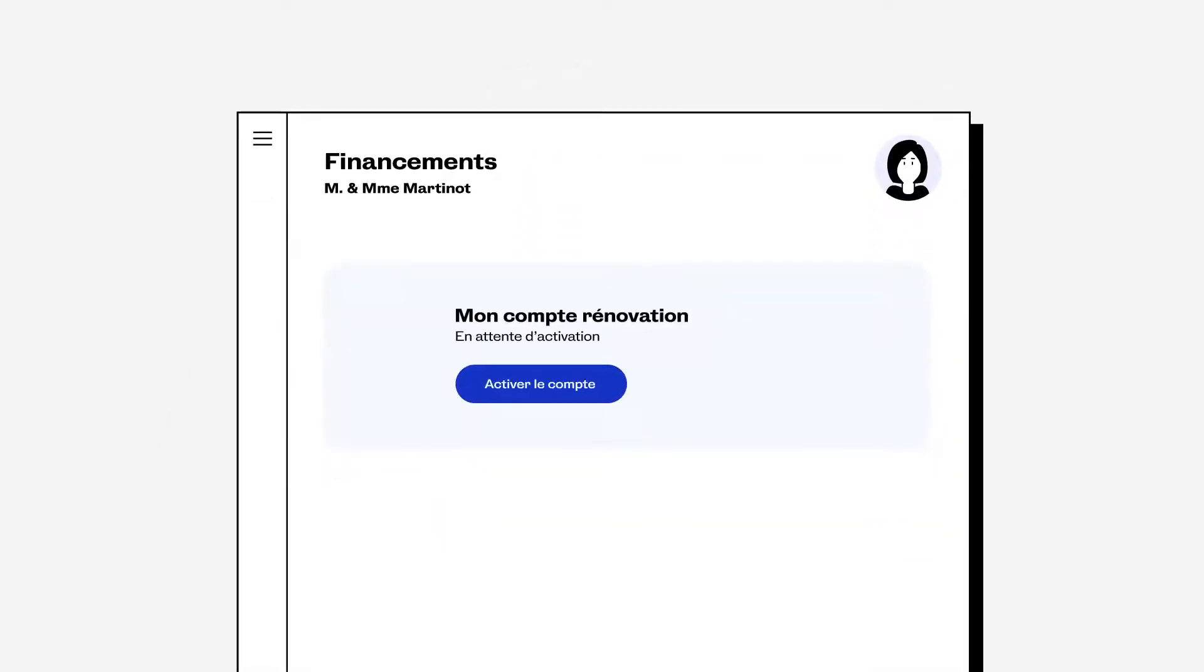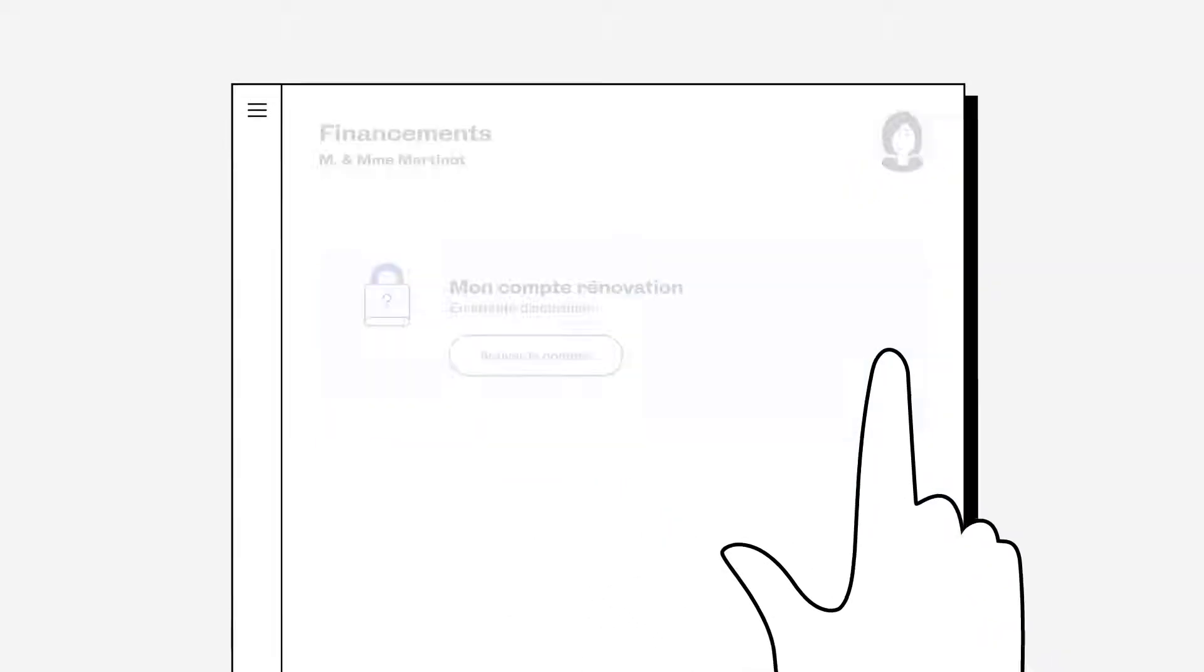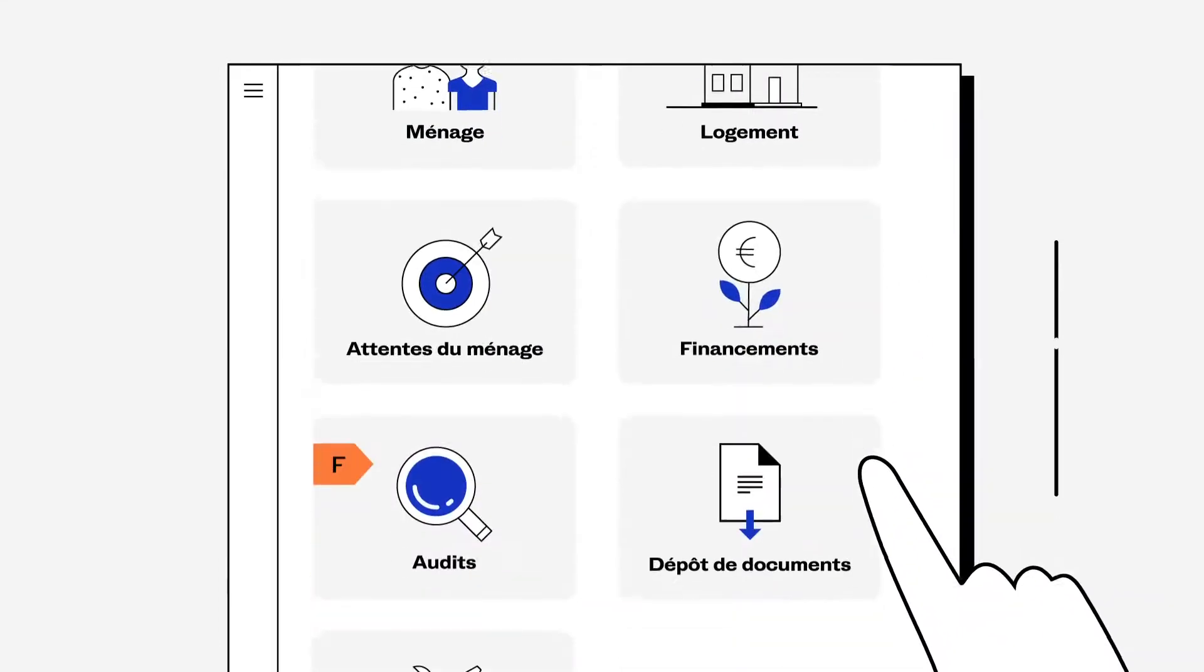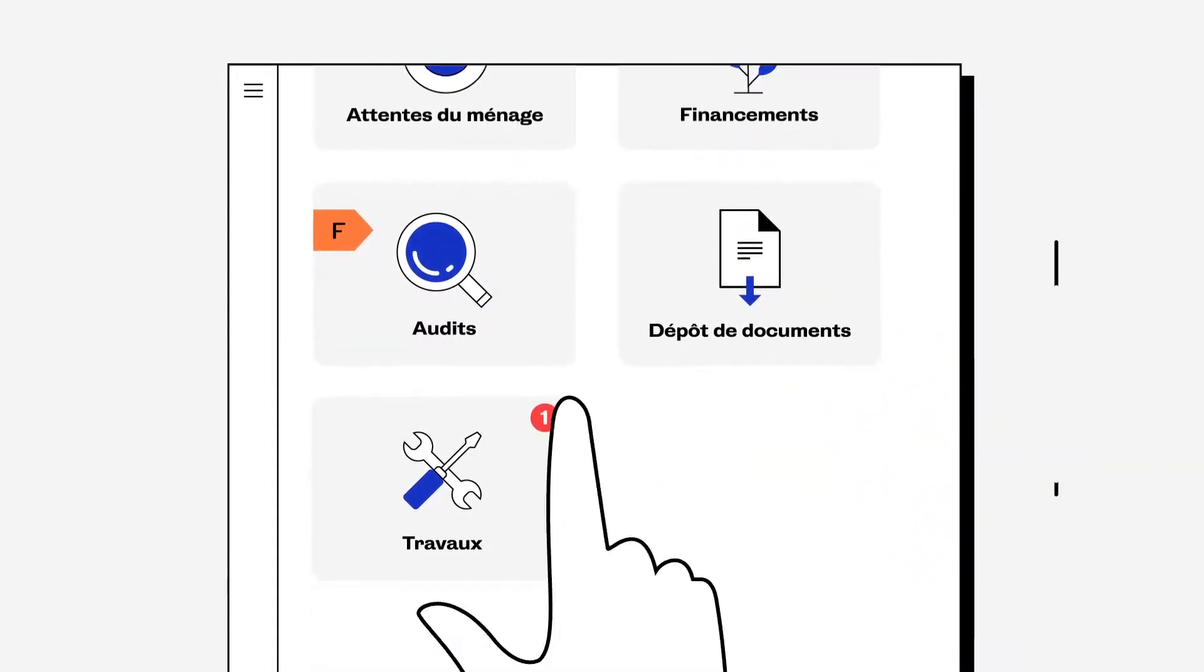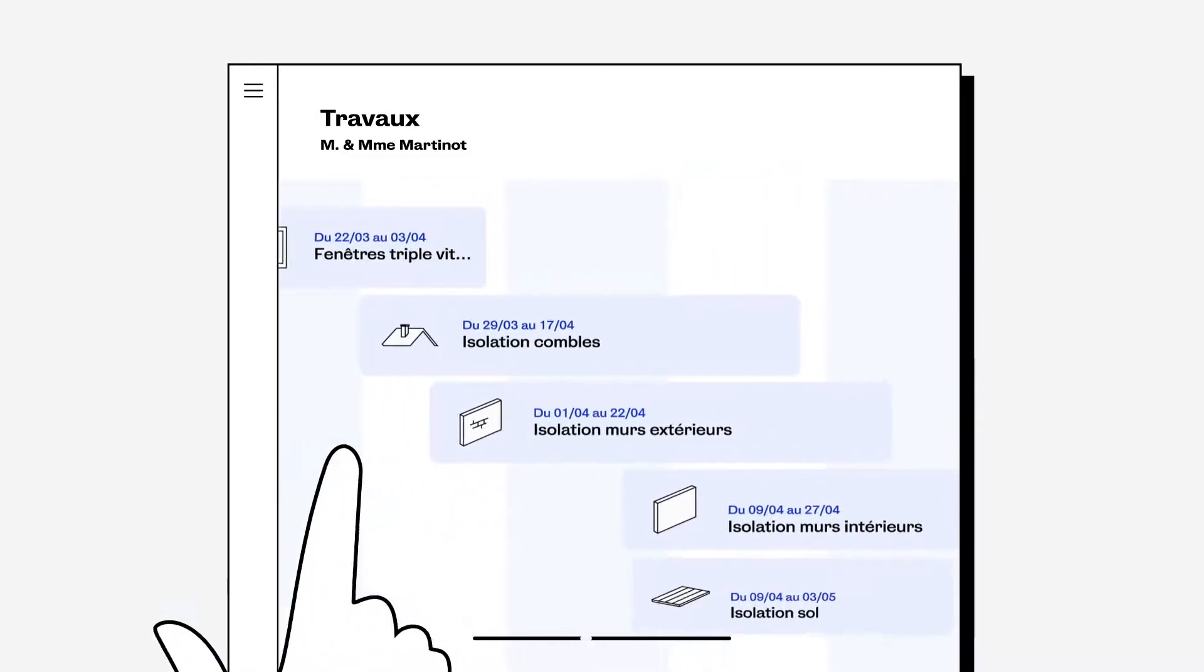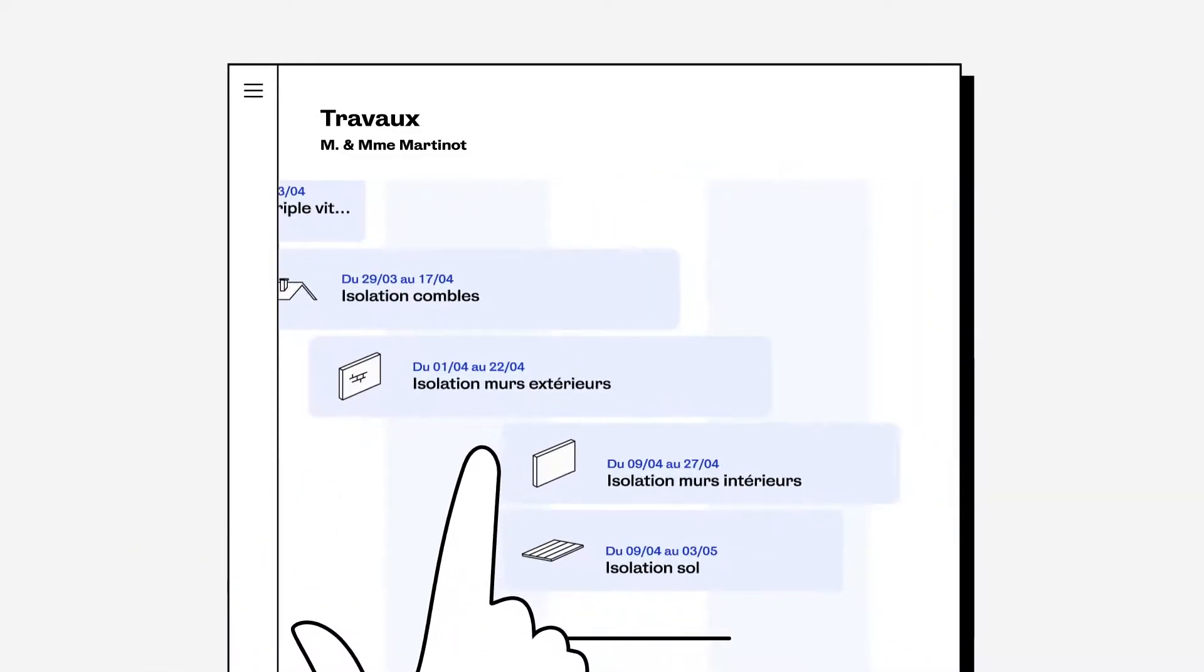She launches the activation of Mon Compte Rénov', a secure account dedicated to all financial transactions of the project. Of course, Louis keeps control over his project thanks to his unique file. He finds the site schedule, work contracts, and aid payment calendar.